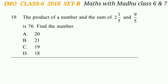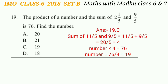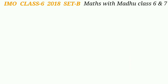Question 19: The product of a number and the sum of 2 whole 1/5 and 9/5 is 76. Find the number. 2 whole 1/5 equals 11/5. The sum of 11/5 and 9/5 is 20/5, which equals 4. A number multiplied by 4 equals 76, so the number is 76 ÷ 4 = 19. The answer is option C.